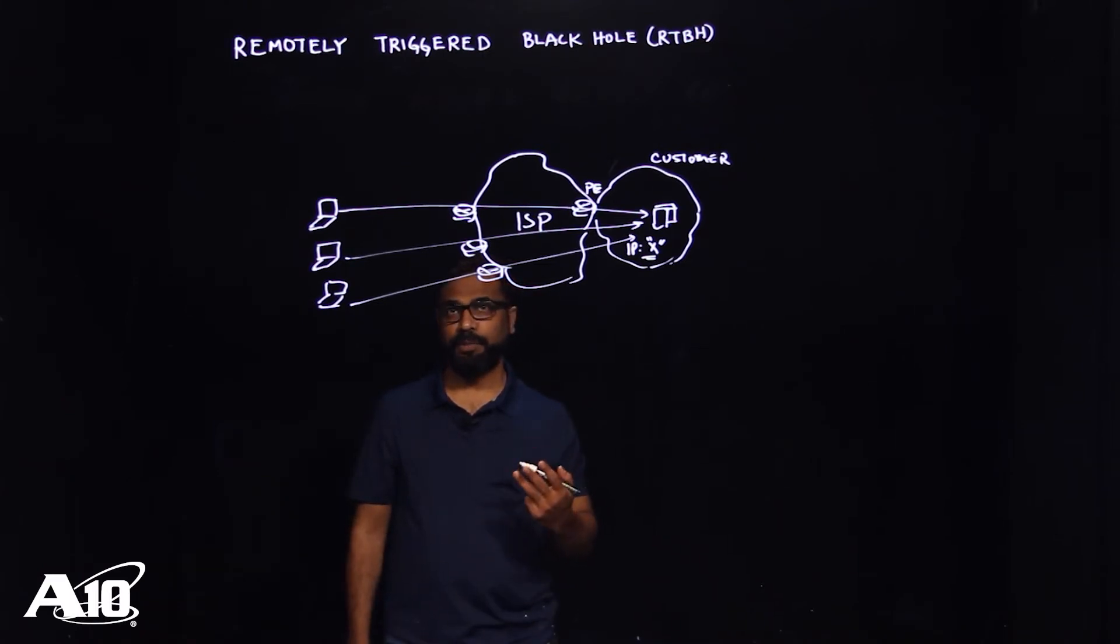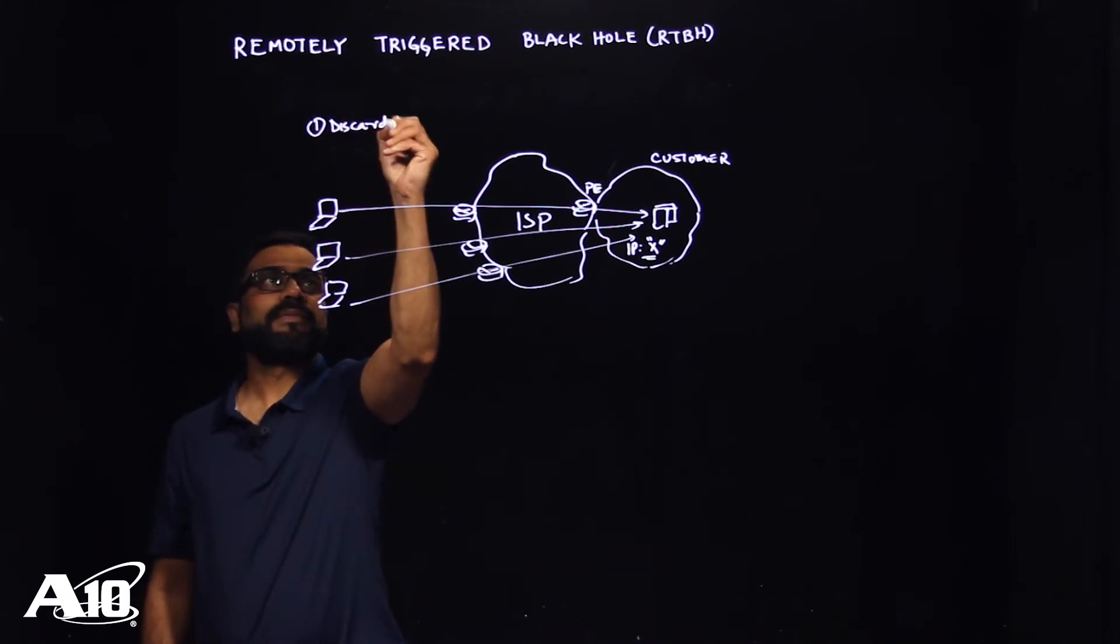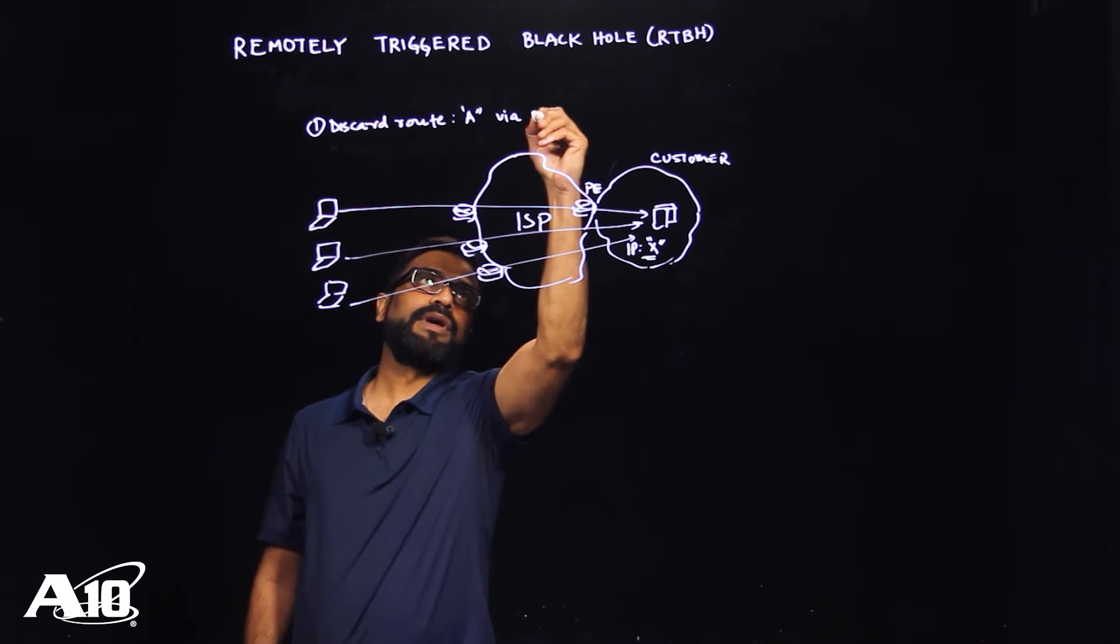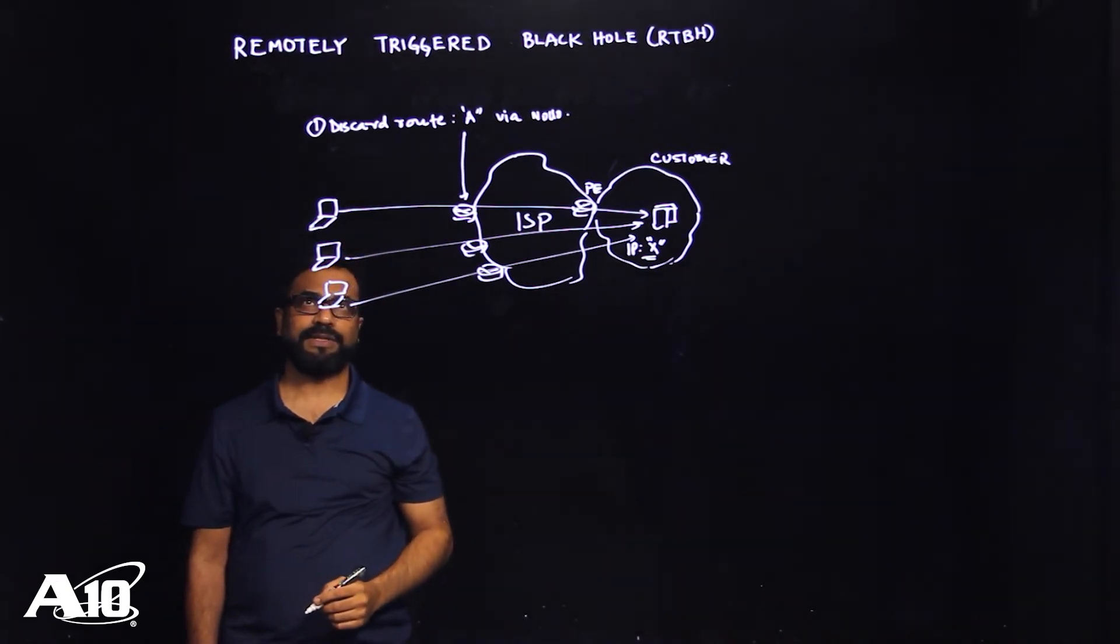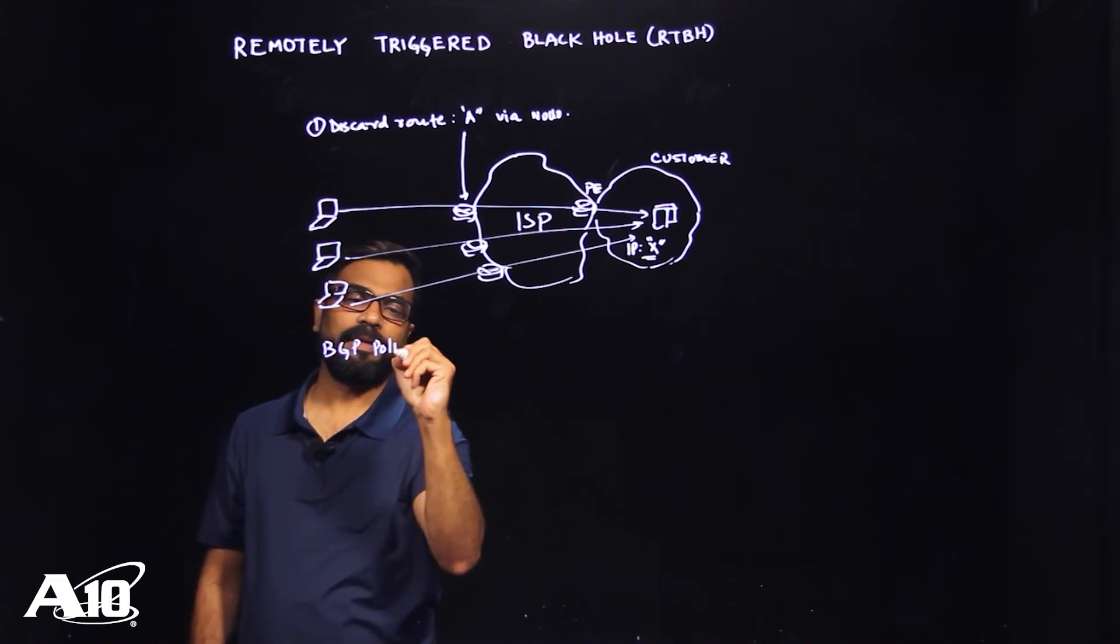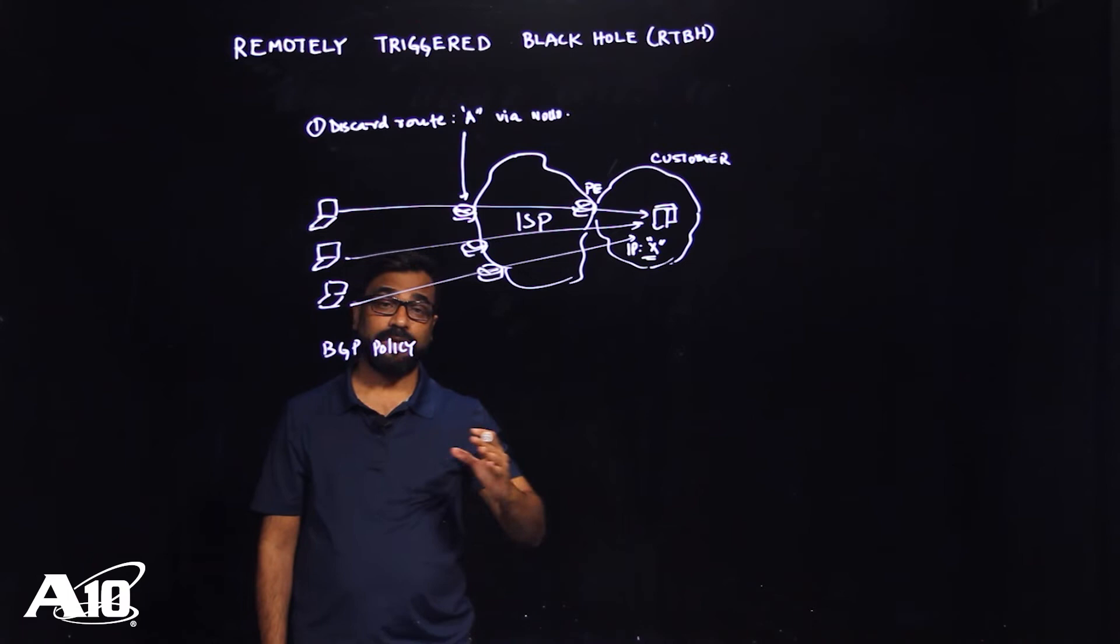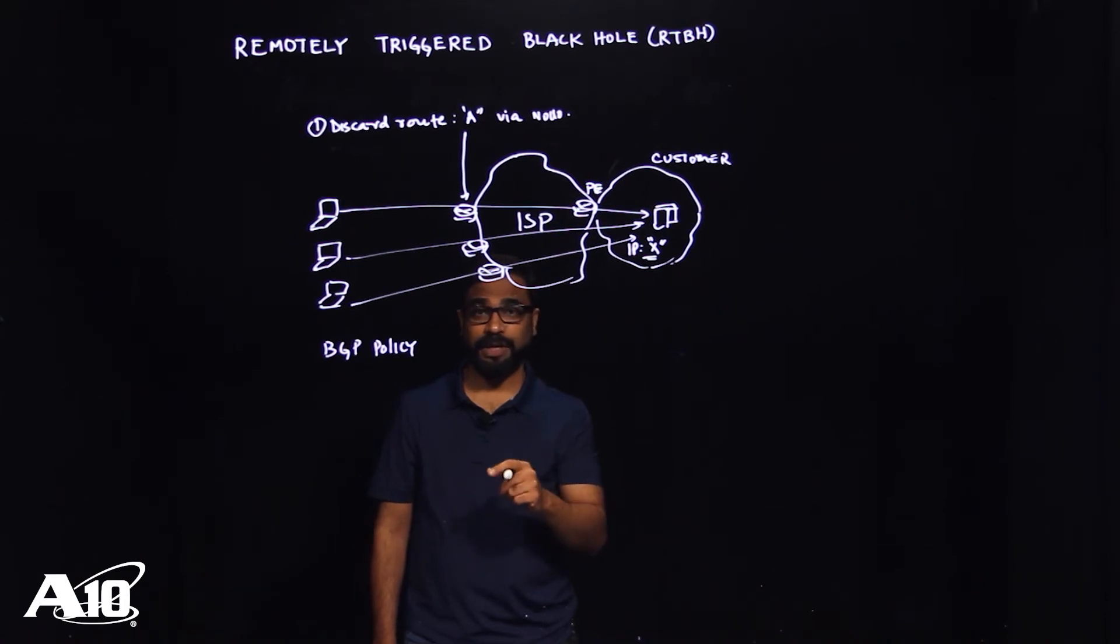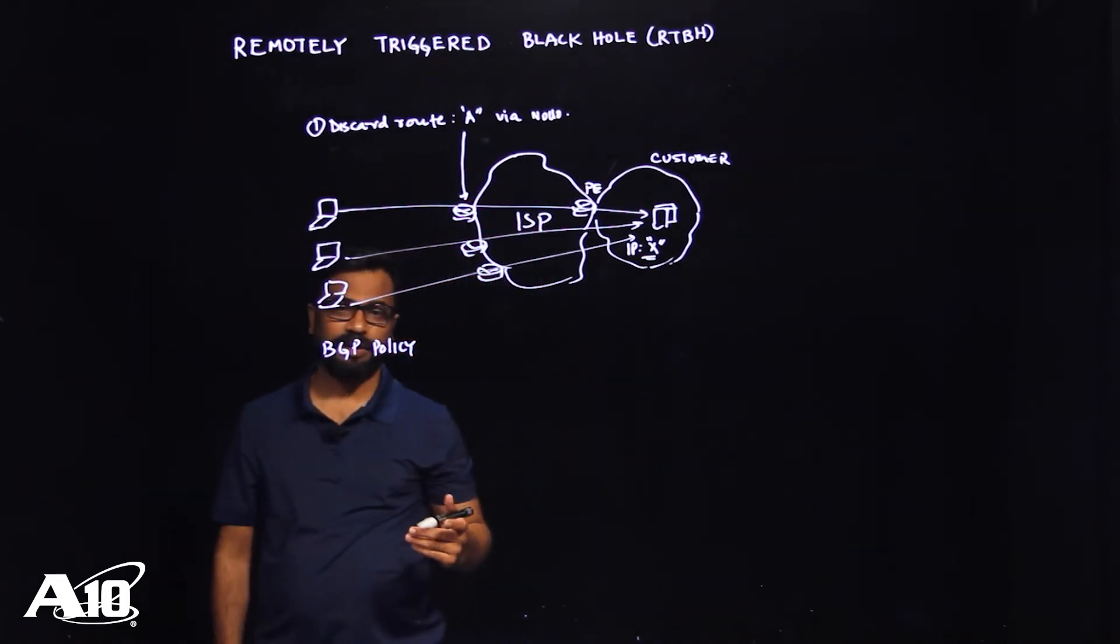So how RTBH works is there are three important things. First thing first, we need to have a discard route pre-configured on all of these edge devices. The second thing we need to have is a BGP policy. And that's where it gets interesting. So we need to have a BGP policy that's going to say that if I receive a route update with a certain community, and if it's a match, I'm simply going to go ahead and for the given specific prefix, I'm going to change the next hop IP address to the IP address that we have actually configured in the discard route.